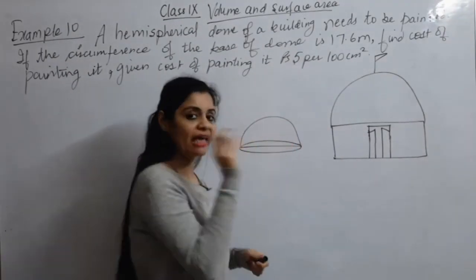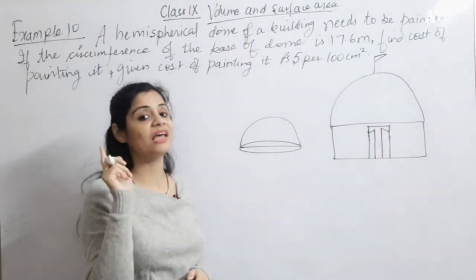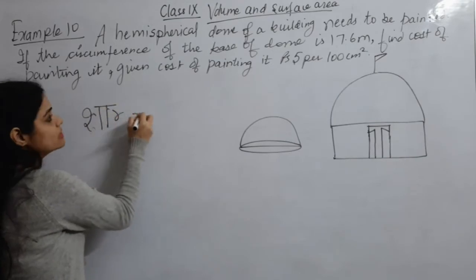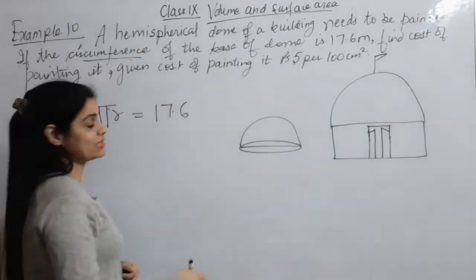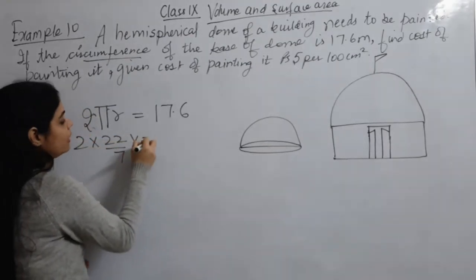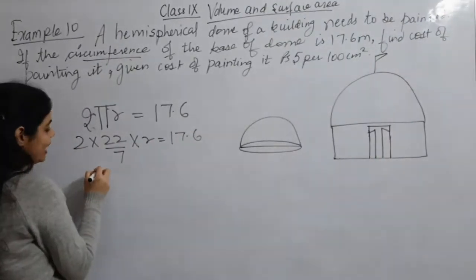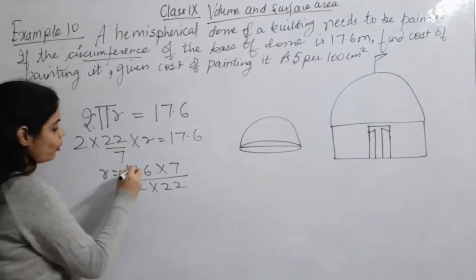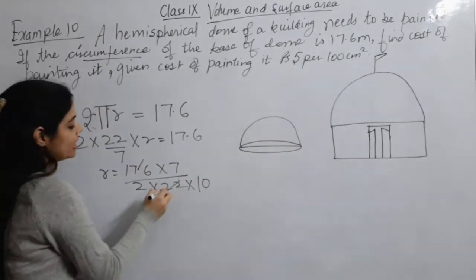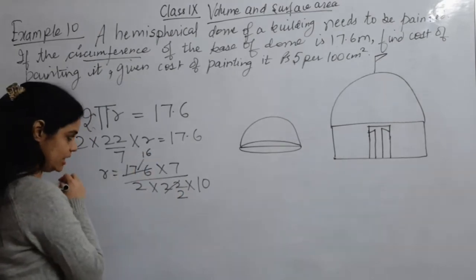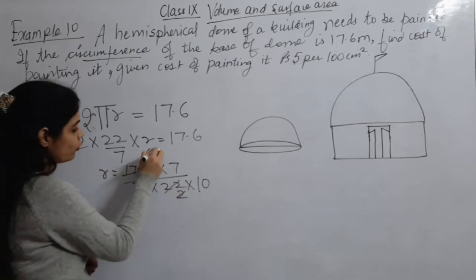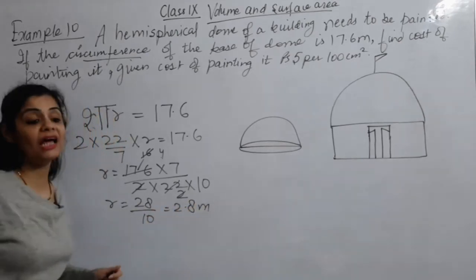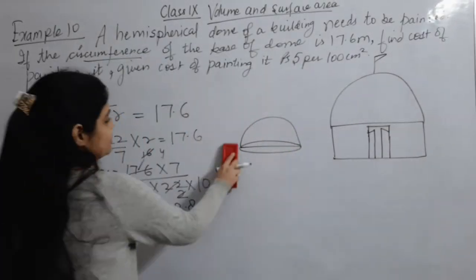The base of the hemisphere is circular, and its circumference = 2 π r. So 2 × (22/7) × r = 17.6. Solving: r = (17.6 × 7) / (2 × 22) = 123.2 / 44 = 2.8 m. So the radius is 2.8 m, which we can write as 28/10.